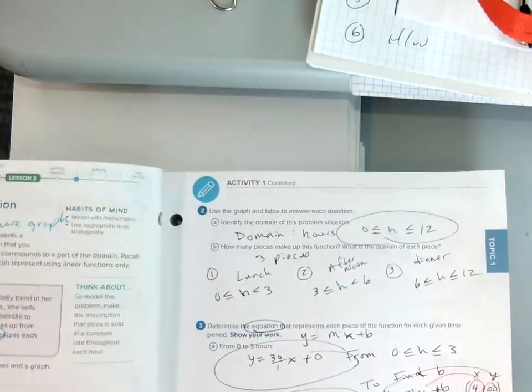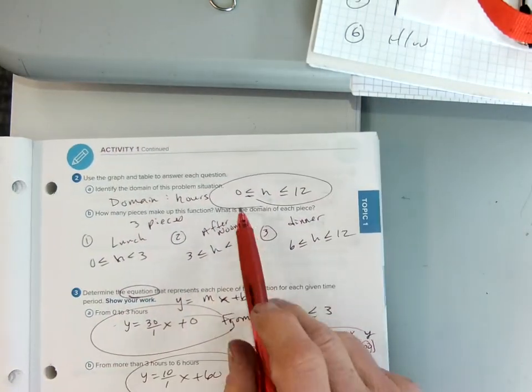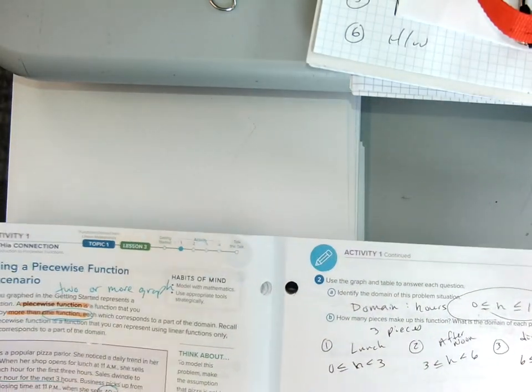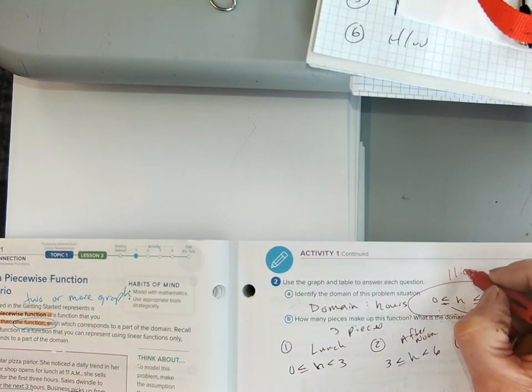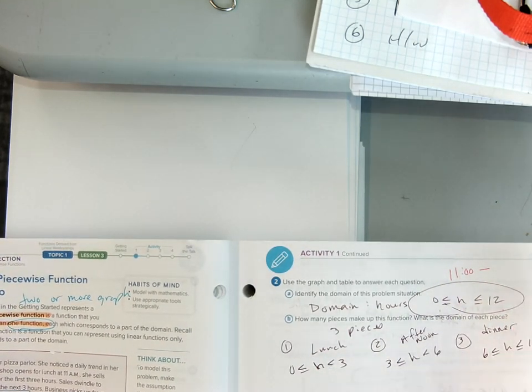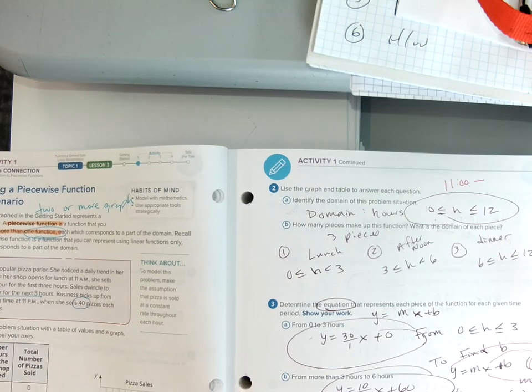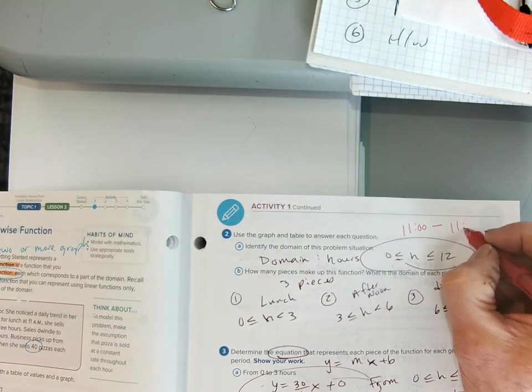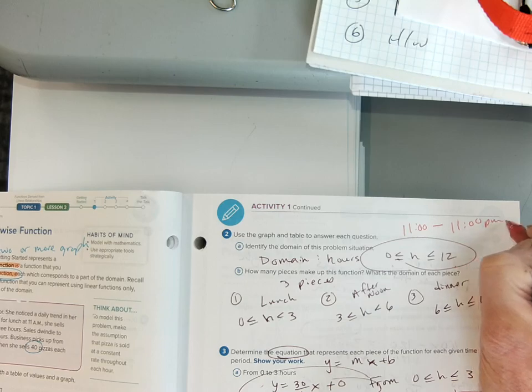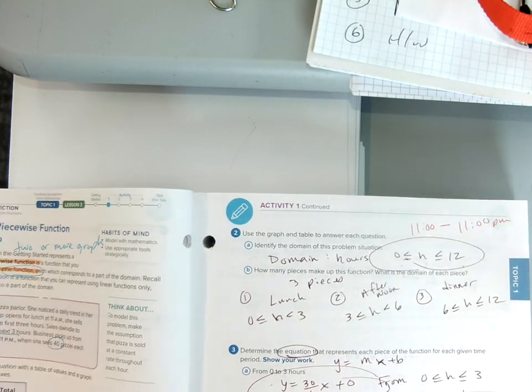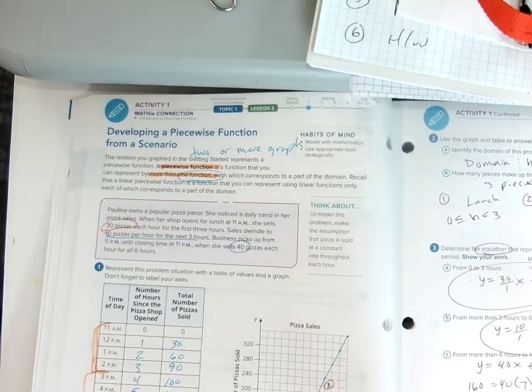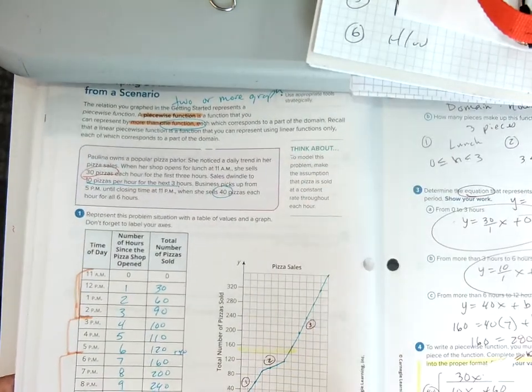So then we talk about the domain. So the domain is really 0 to 12 hours, which is the same thing kind of as 11 o'clock all the way until, it must be all the way until 11 p.m. So it is 12 hours. We have to be careful because the graph talks about the number of hours. So we're going to talk about that number of hours, not time.